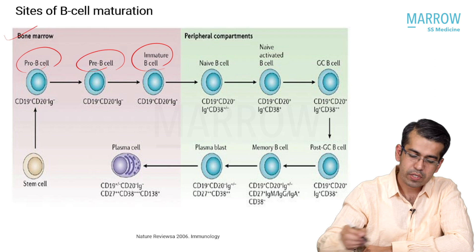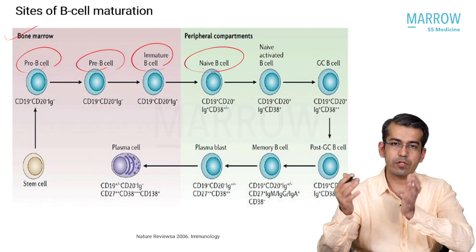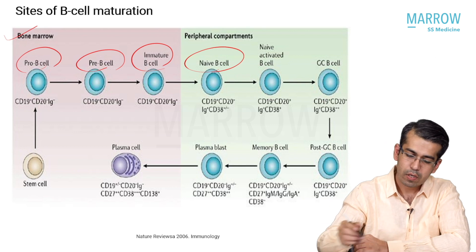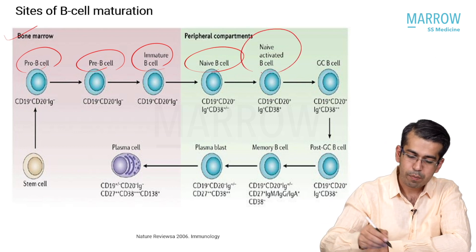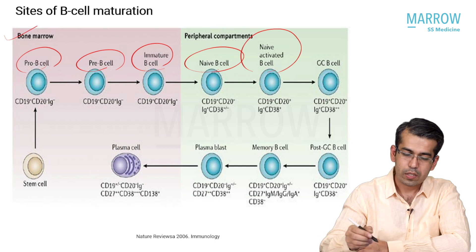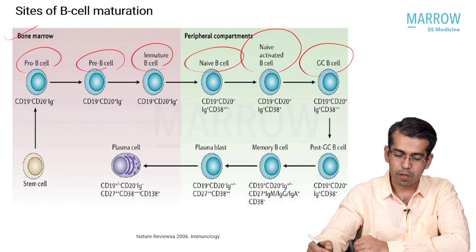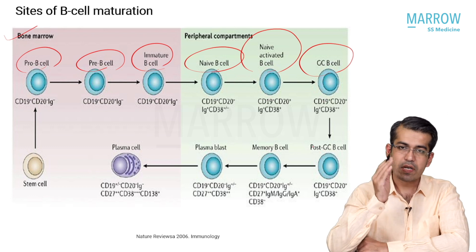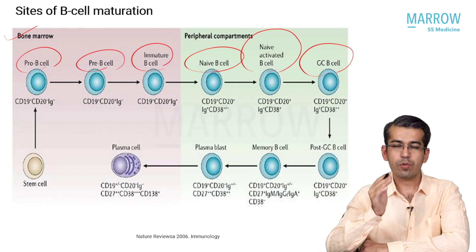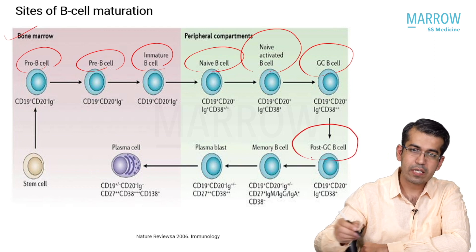When it enters the lymph nodes, it is called a naive B cell - a virgin B cell which has not been exposed to any antigen. It then becomes a naive activated B cell when coming into contact with the germinal center, and after entering the germinal center it becomes a germinal center B cell. After exit from the germinal center but just prior to exit from the lymph node, it is called a post-germinal center B cell.